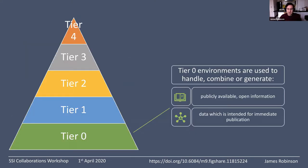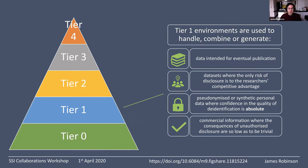The different tiers range from tier zero to tier four. Tier zero is publicly available open datasets, or data intended for immediate publication — the most open classification. Tier one is slightly more restricted: data intended for eventual publication where people worry about being scooped if it were leaked; or pseudonymized or synthetic personal data where there's no chance of de-identification; or commercially sensitive data where the consequences of disclosure would be trivial.